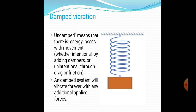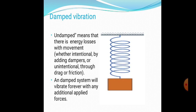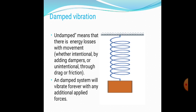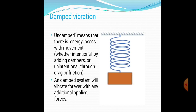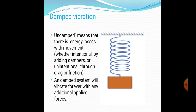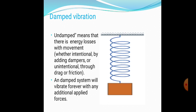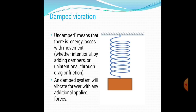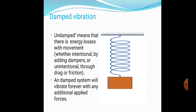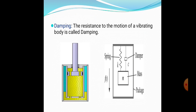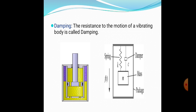What about damped vibrations? Undamped vibration means there is no energy loss. With damped vibration, there is some energy loss. So the spring-mass system with a mass attached — with undamped conditions there is no energy loss, but with damping there is energy loss.